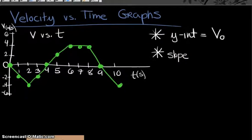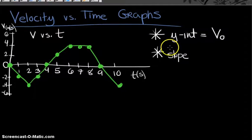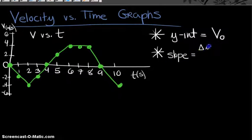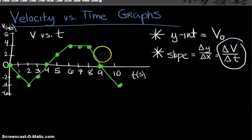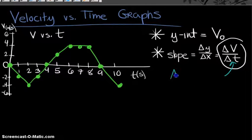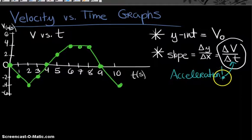The next big idea is the slope of a velocity versus time graph. The slope of any graph is the change in the y-axis divided by the change in the x-axis. In this case, our y-axis is velocity and our x-axis is time, so delta V over delta T is acceleration. The slope of the V versus T graph equals the acceleration of the object.